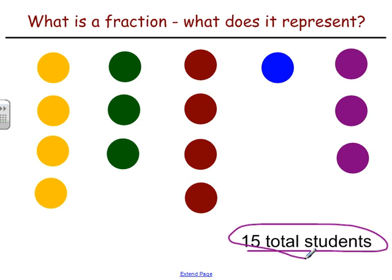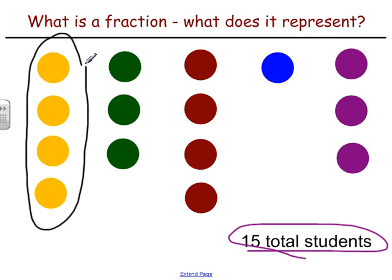Understanding this is important to understanding the idea of adding and subtracting fractions with like denominators. If we look at the group that has yellow as their favorite color — being circled in black now — we can say that this group of four students is this unique set out of the total of 15. So the fraction of students whose favorite color is yellow is four out of 15.